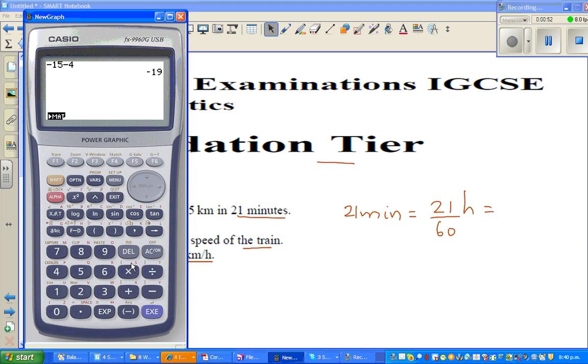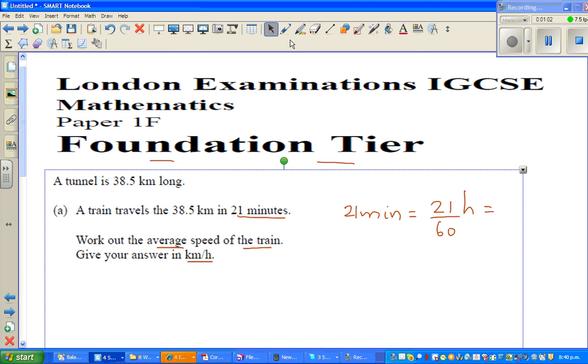I'll use a calculator. So this is 21 divided by 60. That is 0.35h. So this is 0.35h.